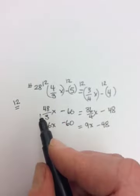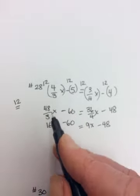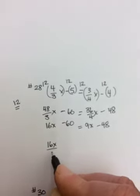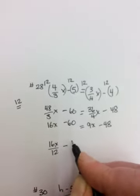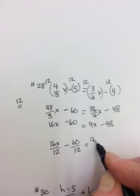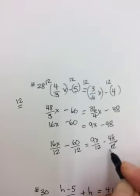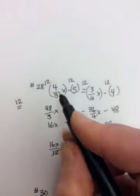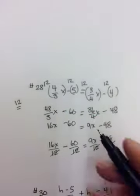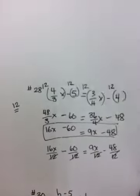If you had changed everything to the lowest common denominator, to over the common denominator, it would end up being 16x over 12 minus 60 over 12 equals 9x over 12 minus 48 over 12. And again, you would just cross out the 12s. So to get this over 12, you need to multiply the 3 by 4, so you have to multiply the top by 4. And then once you get to this spot, now just solve for x. So you finish it up, solve for x.